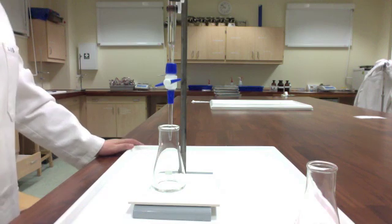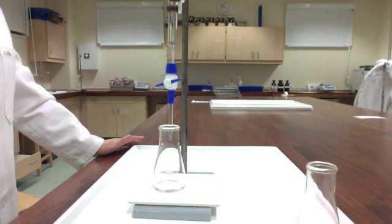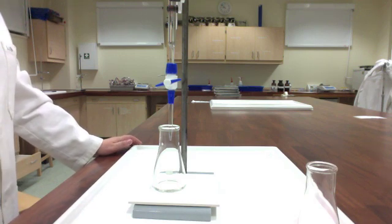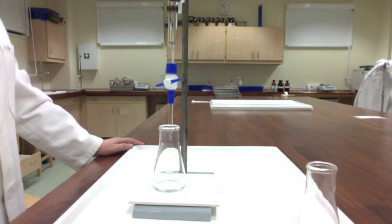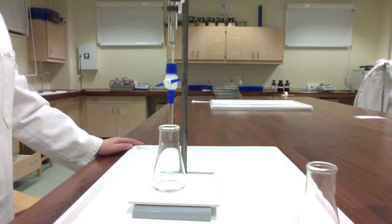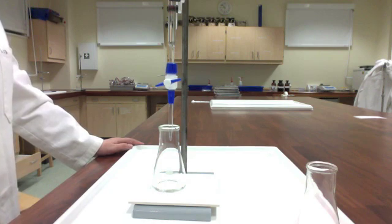All right, so I'm all set up to do my first good titration. It's my second trial. This should be my first good one. I hope. In prepping my sample, again, I pipetted 10 milliliters of my desired sample, in this case, KHP, and I put in about four drops of phenolphthalein indicator.